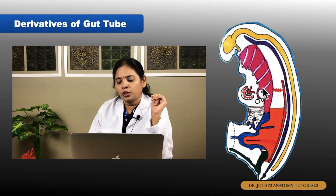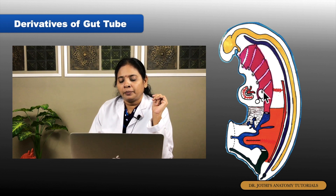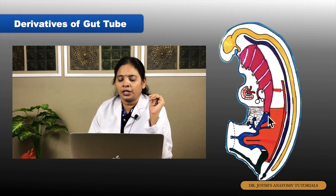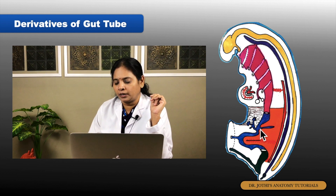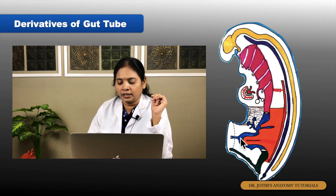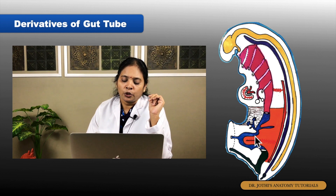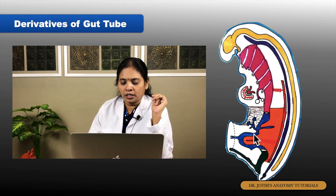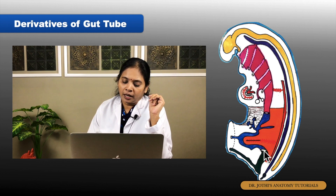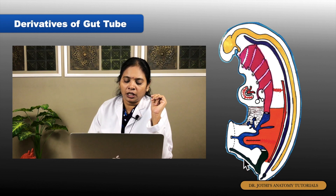Now, there is a laryngotracheal tube which is a foregut derivative. In the foregut, we divide it into a pre-laryngeal part and a post-laryngeal part. The pre-laryngeal part forms the pharynx, and the post-laryngeal part forms the upper portion of the esophagus. In the midgut tube, the communication with the umbilical vesicle is through the vitello-intestinal duct. One superior mesenteric artery branch from the dorsal aorta supplies this loop. The midgut is arranged as a C-shaped loop, giving a pre-arterial loop and a post-arterial loop.